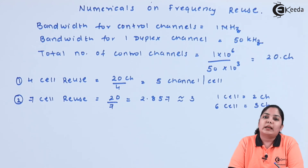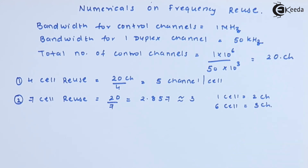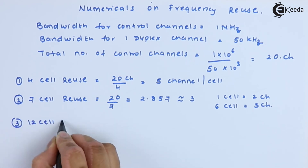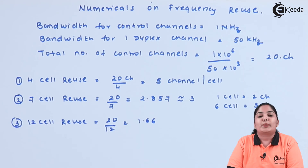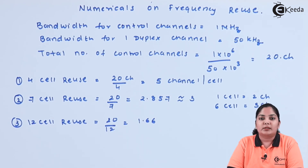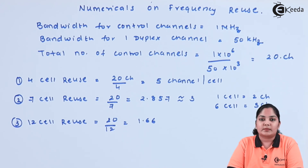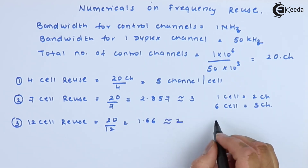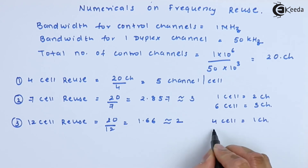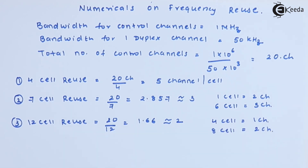We again note that one control channel per cell is sufficient. For 12 cell reuse, we divide the total number of control channels by 12, and the answer is 1.66. So the distribution is: 4 cells will get 1 control channel and the remaining 8 cells will get 2 control channels, which in total gives us 20 control channels.